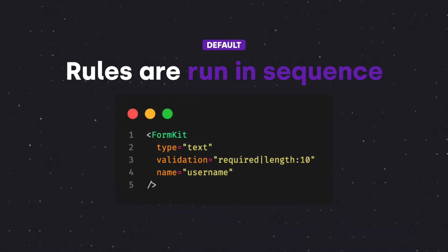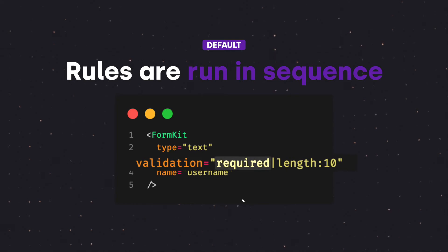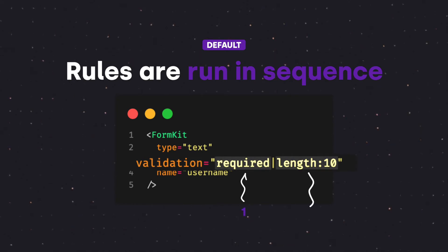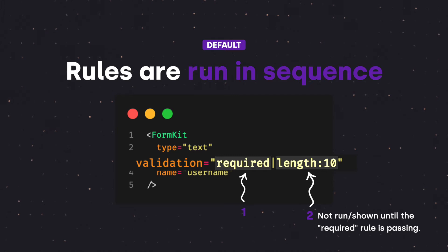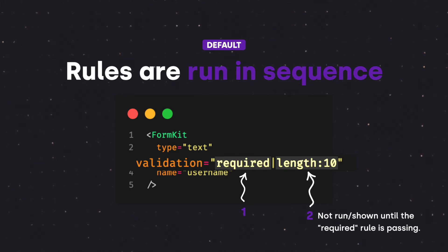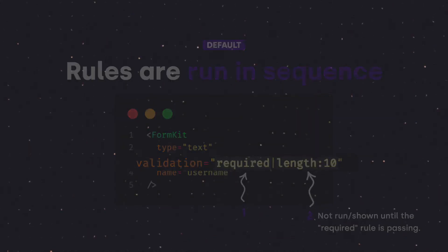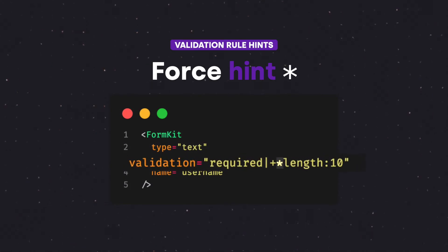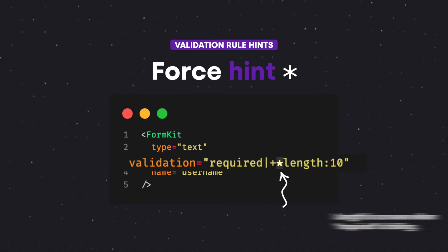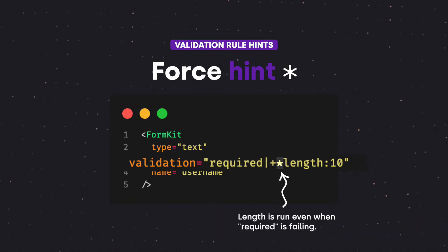By default, validation rules are run in sequence — in the order they are declared. When a rule fails, any remaining rules are not run. This allows end users to address the most important feedback first, like noticing a username field is required before concerning themselves with other rules, like if the username is not long enough. To alter this behavior, we use the force hint marked by an asterisk to force a rule to run even if a previous rule was failing. Now the length rule will run even when required is failing.